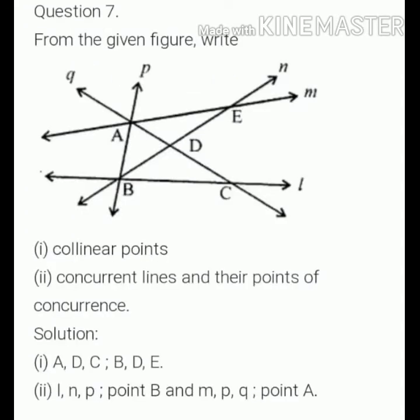Question number seven. Look at the figure and write the collinear points. So, there are A, D, C are collinear points on line q, and B, D, E are collinear points on line n.